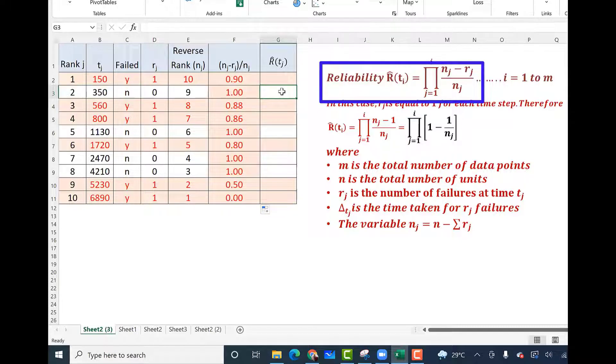And the reliability is the multiplication of all previous terms. For the first term, it will be the same term because there is no previous term. For the second one, it will be multiplication of the first and the second. And now this already has got multiplication of the first two. So for the third term, I can use this 0.9 into 0.88 and so on. So I can just copy this.